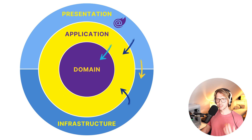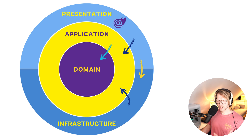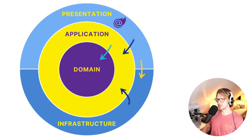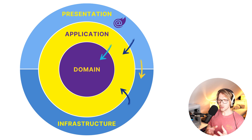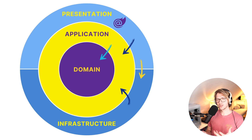Before we do that, let's have a look at the clean architecture image. You see different layers: domain, application, presentation, and infrastructure. The domain is the core of clean architecture — everything is drawn to the domain. The arrows also indicate the direction in which you reference the different layers and projects.